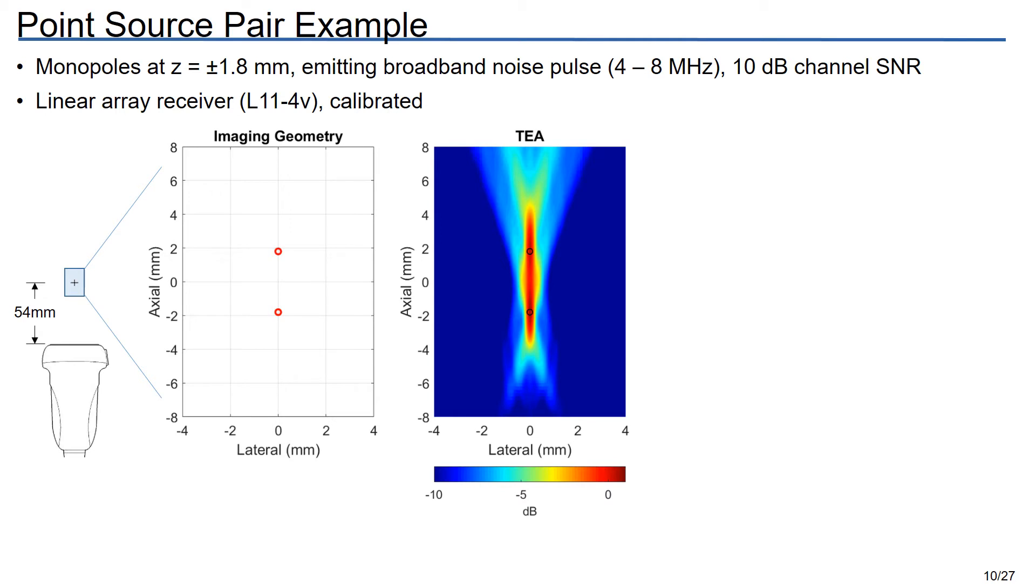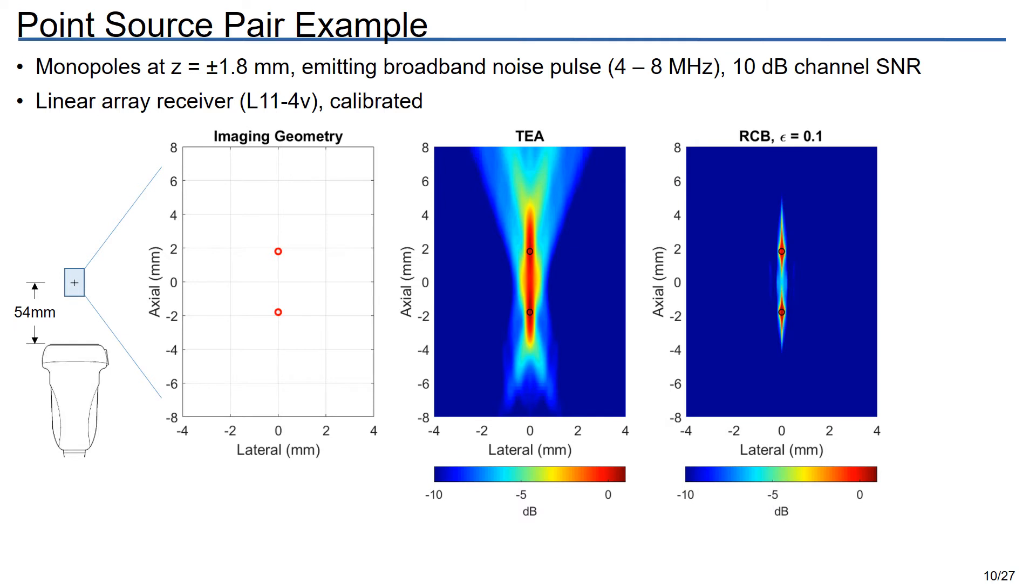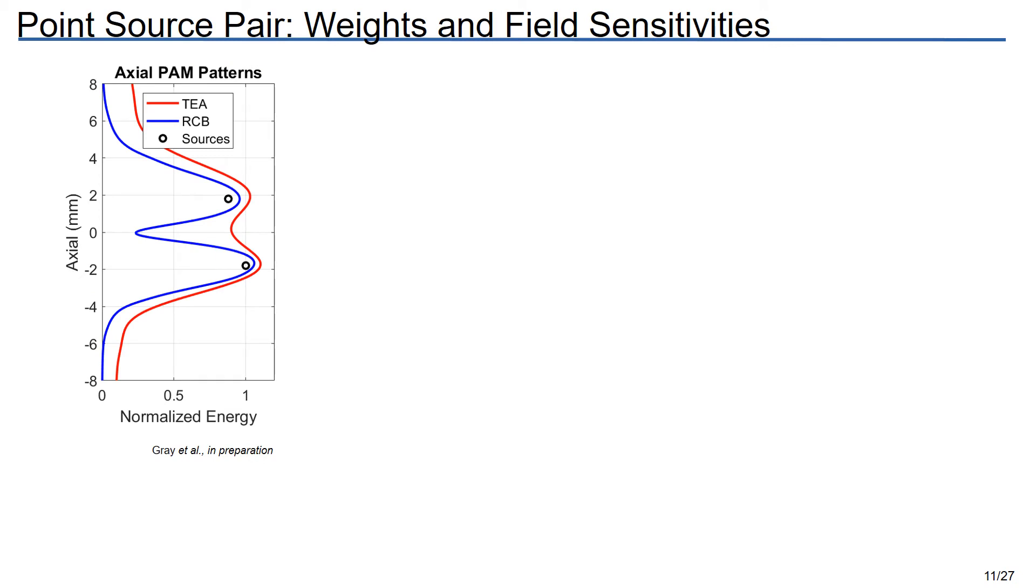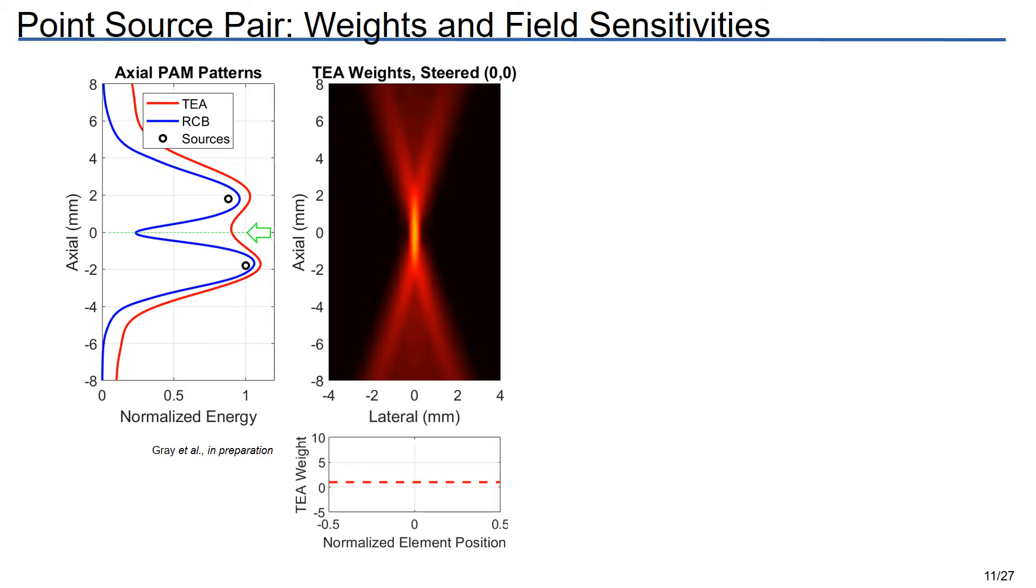A further illustration now is if we implement two sources instead of one. Here we've got a pair of monopoles that are separated by 3.6 millimeters total. Same broadband noise emissions. And just to make things a little bit more difficult, I lowered the channel SNR, but it's still pretty good. Here the non-adaptive beamformer is not able to tell the two sources apart. And in fact, it also grows some additional tail features that are stronger in magnitude. But RCB is able to tell these apart quite nicely. Again, this is easier to see if we look at the axial patterns. And in particular, we see that RCB has done a nice job of drawing a minimum between the two source locations and is also doing a pretty good job at estimating the source energies that are indicated by the black circles.